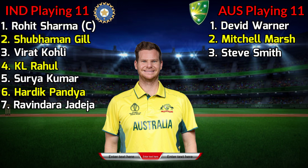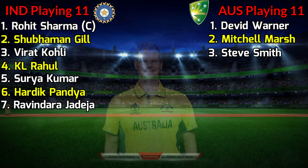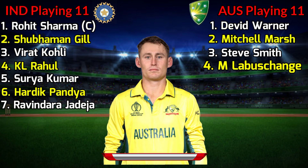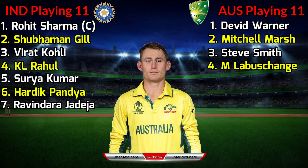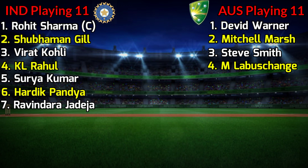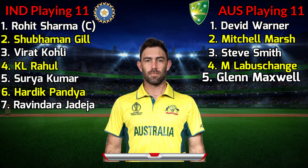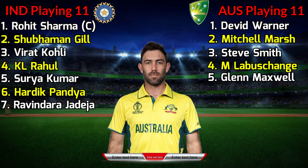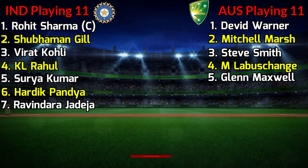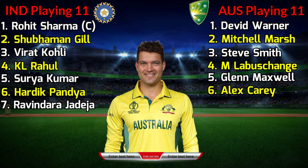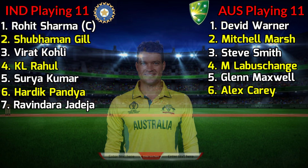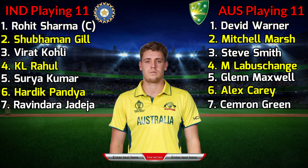Team Australia Middle Order. No. 3 Steve Smith, Right Hand Batsman. No. 4 Marnus Labuschagne, Right Hand Batsman. No. 5 Glenn Maxwell, Right Hand Allrounder. No. 6 Alex Carey, Left Hand Batsman.